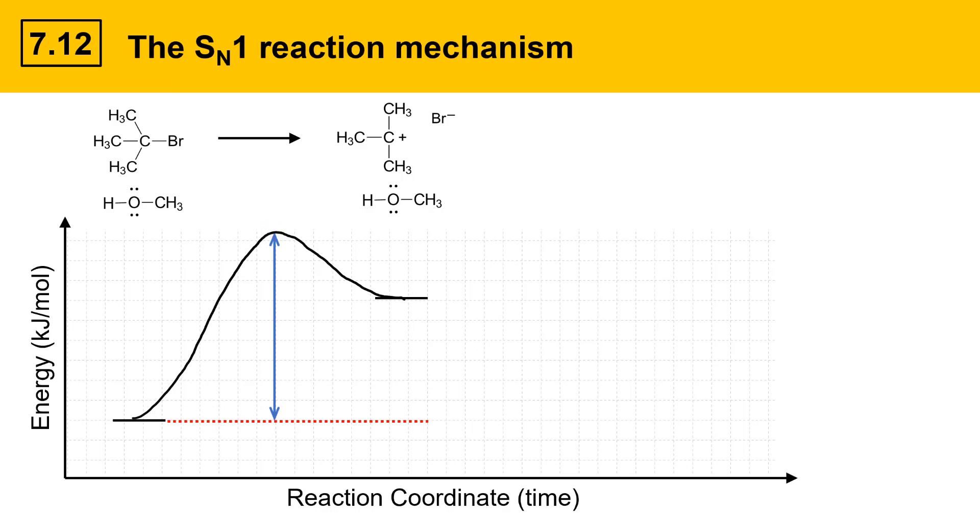the transition state, that'll give us E sub A1. That is the activation energy of the first step for forming the carbocation intermediate.